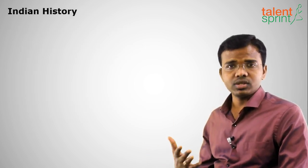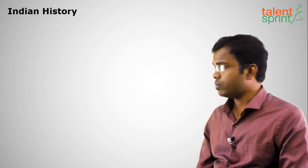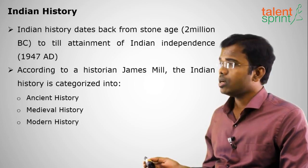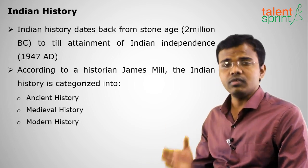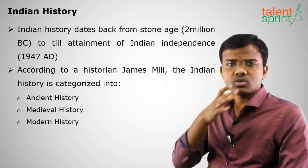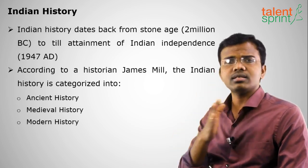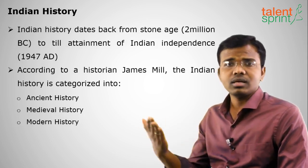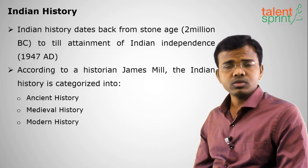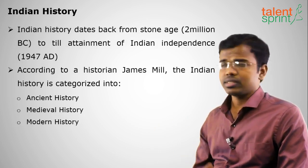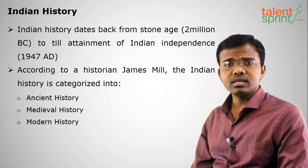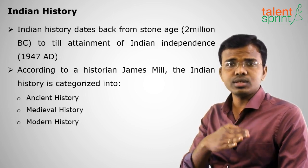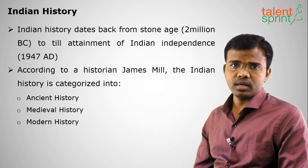Moving on to Indian history — Indian history is divided into various stages, which we shall study in detail in later topics. According to historian James Mill, Indian history is divided into three parts: ancient history, medieval history, and modern history. The Indian history timeline dates back from 2 million BC to 1947 AD.